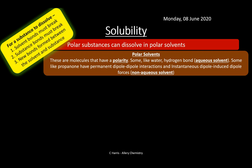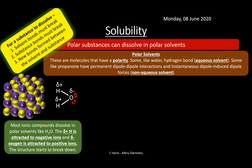Water forms hydrogen bonds between solvent and substance, creating an aqueous solution. Some solvents like propanone have permanent dipole-dipole interactions and instantaneous dipole-induced dipole forces — these are non-aqueous polar solvents. Water is probably the most universal solvent because it's easy to obtain, accessible, and non-toxic to humans. So let's see how this works with most ionic compounds, which dissolve in polar solvents like water.